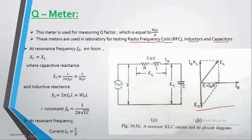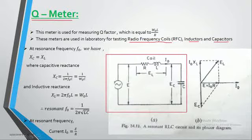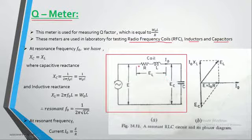The Q meter is especially used for testing radio frequency coils as well as inductors and capacitors. Here I'm taking the RLC resonant circuit to calculate the quality factor. In the RLC resonant circuit, the circuit can act as inductive, capacitive, or resistive in nature depending on the operating frequency.